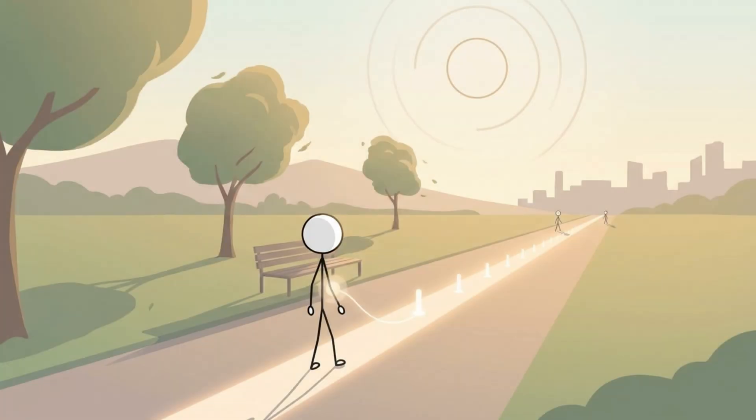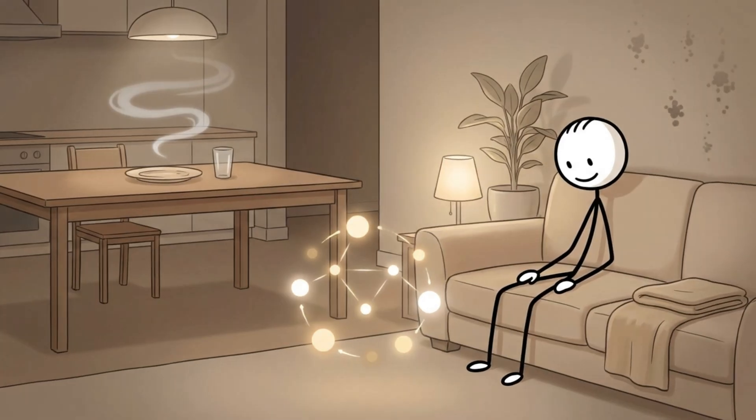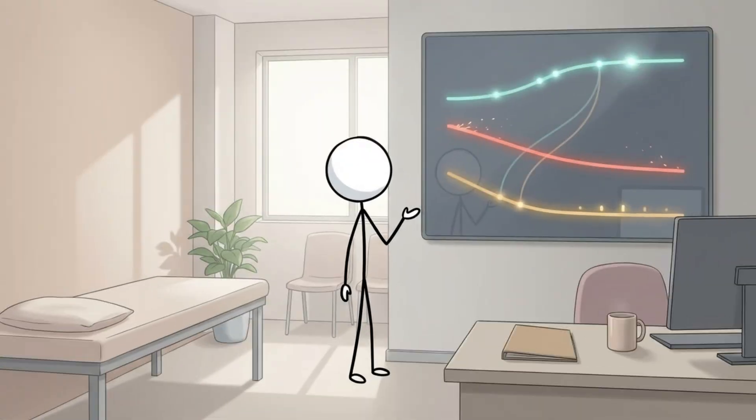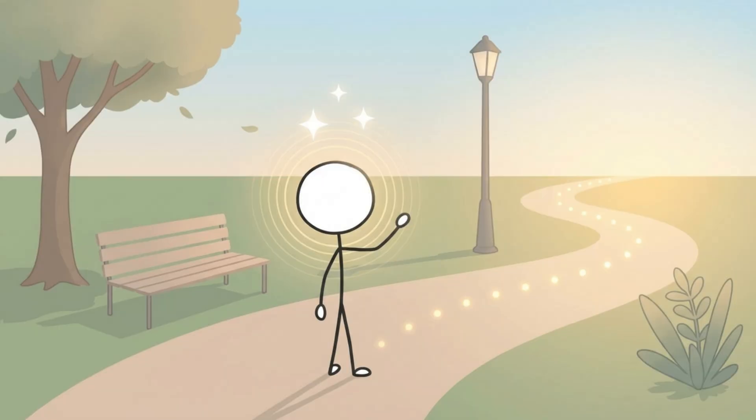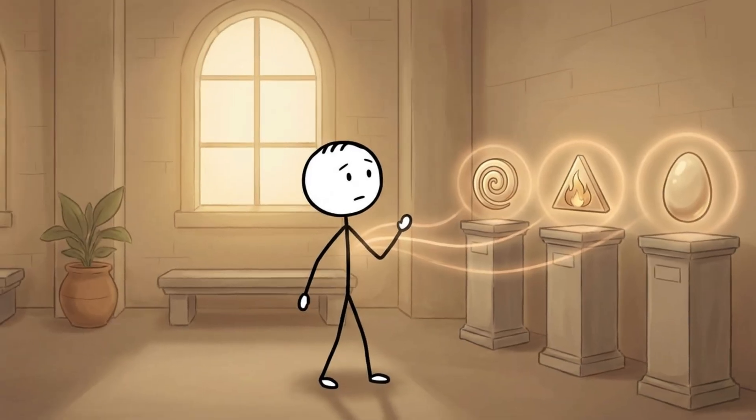As researchers began studying fasting more closely, they noticed a pattern. The same biological shifts that improve short-term energy also support long-term longevity. When digestion quiets down, the body finally has time to focus on cellular preservation, repairing damage that would otherwise accumulate with age. Studies from the National Institute on Aging show that animals placed under controlled caloric restriction live longer, with stronger mitochondria, lower inflammation, and fewer signs of metabolic decline. Human data echoes the trend. When insulin sensitivity improves and oxidative stress drops, the systems responsible for aging begin to slow their descent. It's not about becoming immortal, it's about aging slower, staying sharper, and preserving vitality for more years than you thought possible.